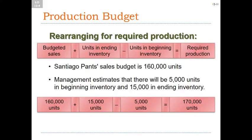As for fine cotton, it takes 0.2 yards of fine cotton to make one unit, so: 170,000 times 0.2 yards equals 34,000 yards. Add the desired ending inventory to get 35,000 yards, subtract beginning inventory of 1,000 yards, and you end up needing 34,000 yards of fine cotton. At $5 per yard, the cost of fine cotton for the year is $170,000. Adding both together gives total raw materials of $1,715,000.